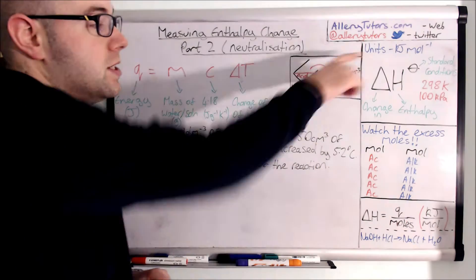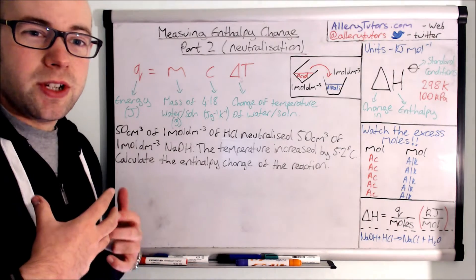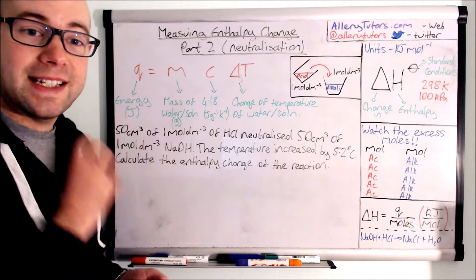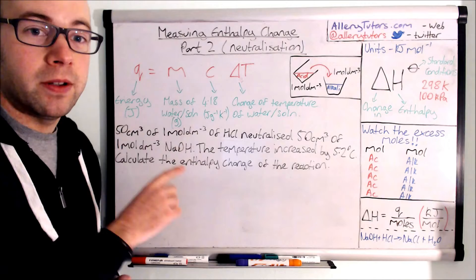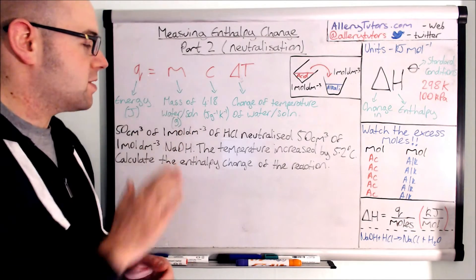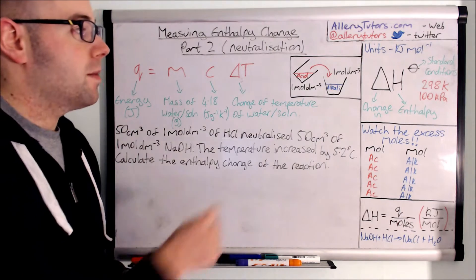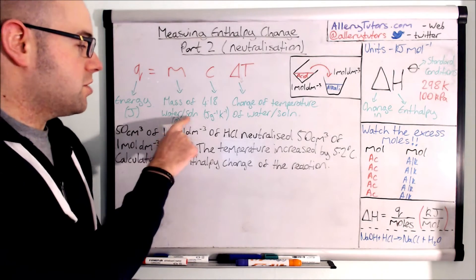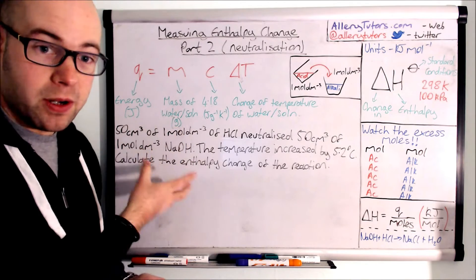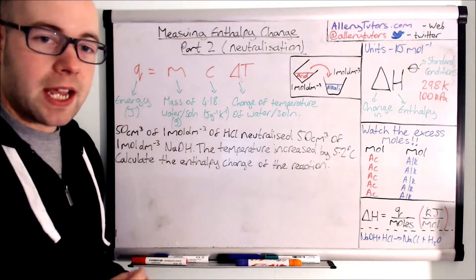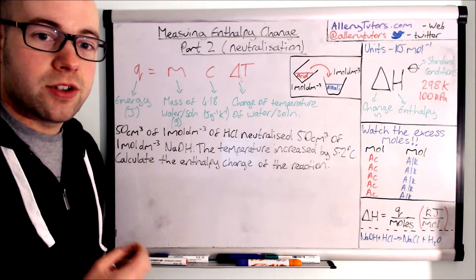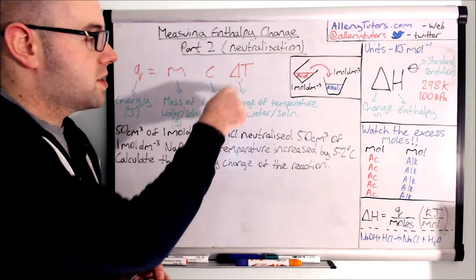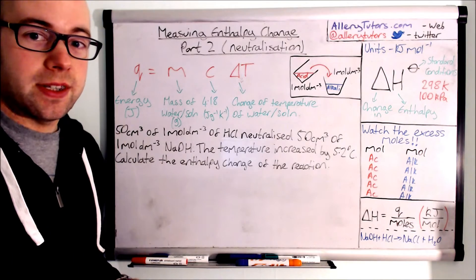The units are kilojoules per mole. We're also going to use the equation Q = mcΔT. Q is energy in joules — different to enthalpy which is kilojoules per mole, so don't mix them up. M stands for mass of water or solution. In this case we're mixing an acid with an alkali in a polystyrene cup, so the mass is the total solution. C is specific heat capacity, given as 4.18 joules per gram per kelvin — this will be given in your exam. Delta T is the change in temperature of the solution.